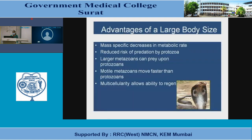Homeotherms — mammals and birds — consume 29 times more energy than a poikilotherm of equal mass. The number of cells is a function of metabolic rate. Advantages of large body size include mass-specific decrease in metabolic rate, reduced risk of predation by protozoans, and faster movement. Multicellularity allows ability to regenerate.